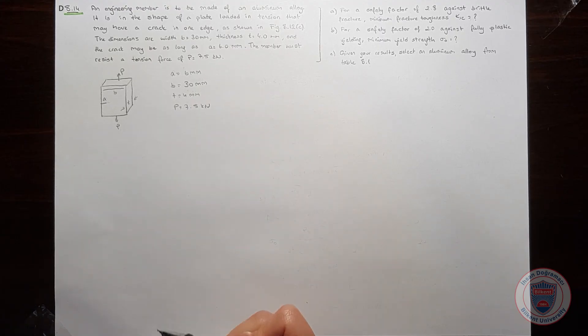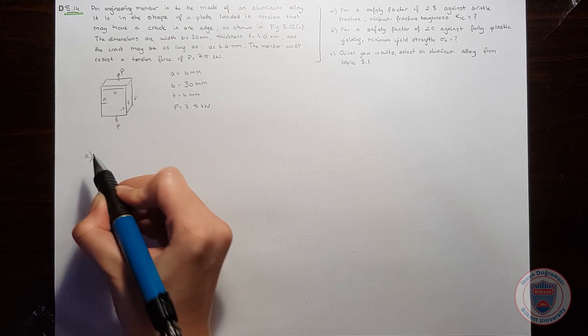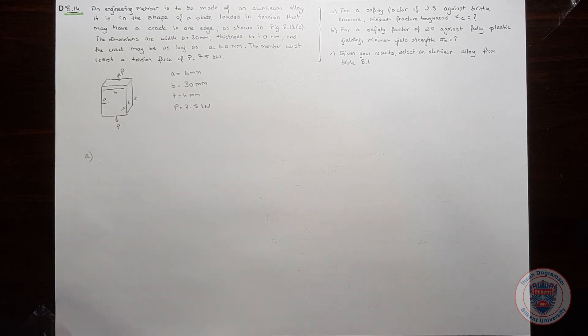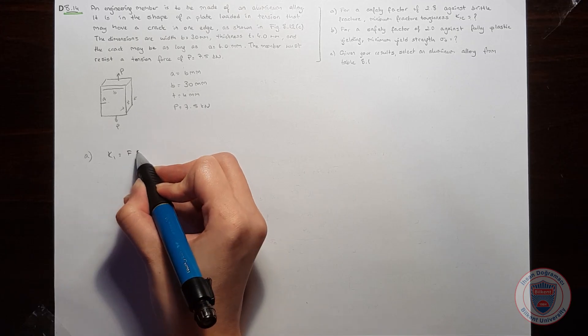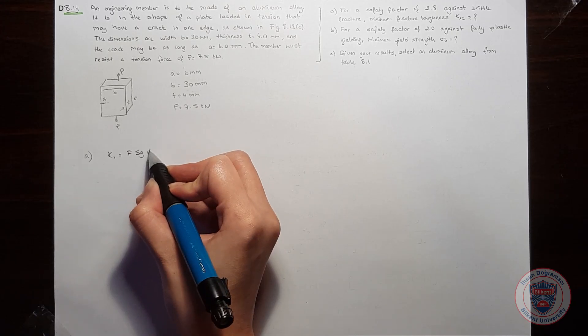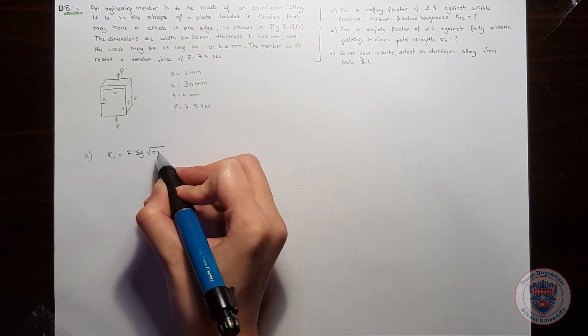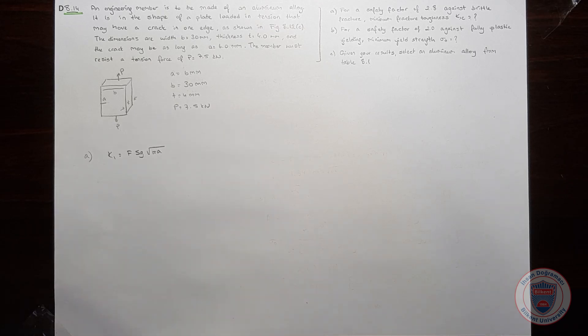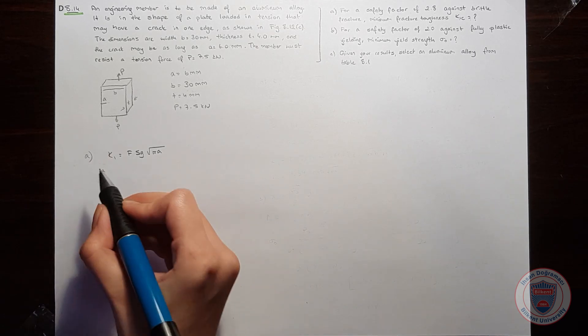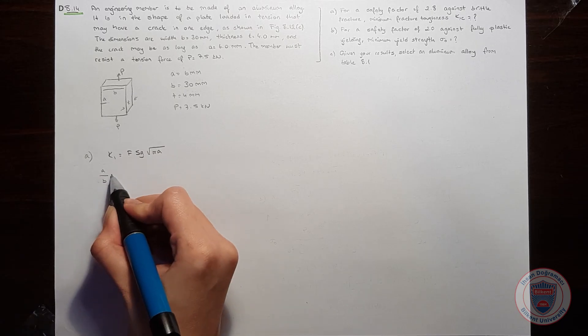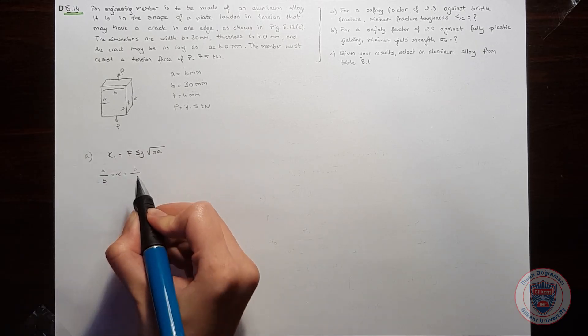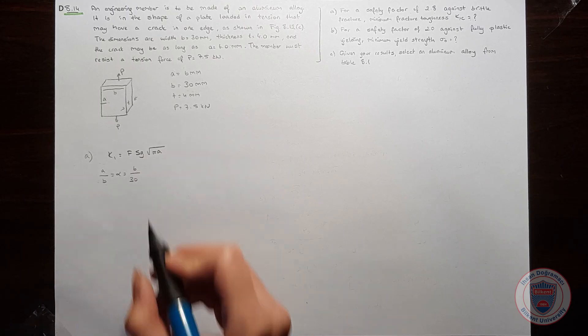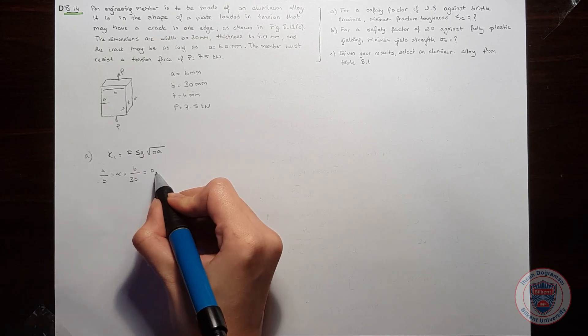Let's look at the question. In part A, we have an equation: K1 is equal to F times SG times square root pi times A. For this question, we have the crack size over width which is alpha, and it is equal to 6 over 30 mm, which gives us 0.2.